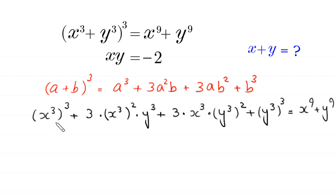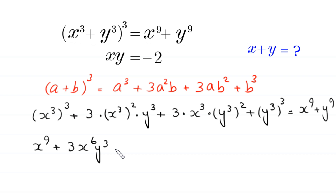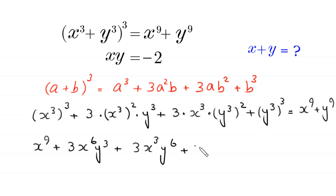Expanding each term: this becomes x⁹ + 3 times x⁶ times y³ + 3 times x³ times y⁶ + y⁹, and this is equal to x⁹ + y⁹.